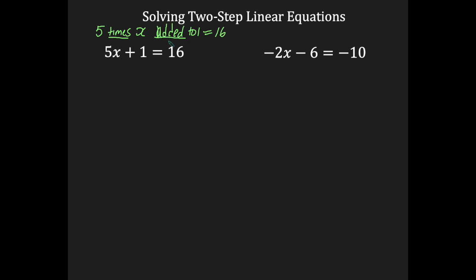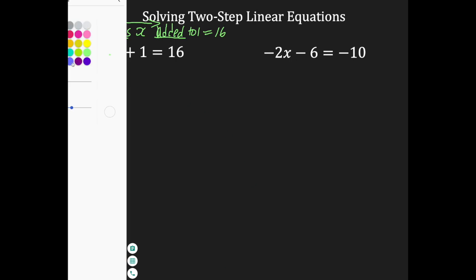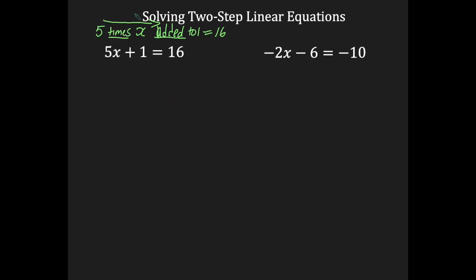In order to solve this, I have to go backwards and do the opposite. Reading, I go this way, so to solve I've got to go the other way. I have to perform a subtraction first, and then the opposite of times is divide. So subtraction first and then division, which means I would subtract 1 and then divide by 5.